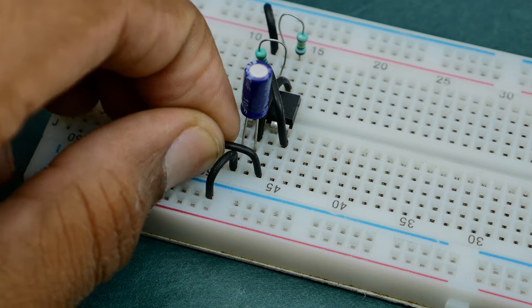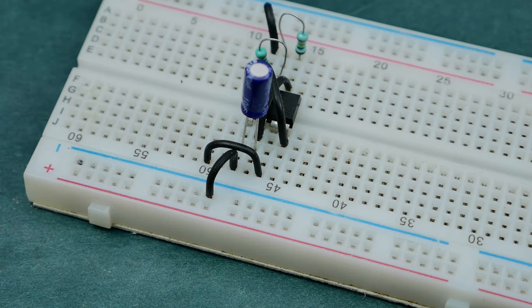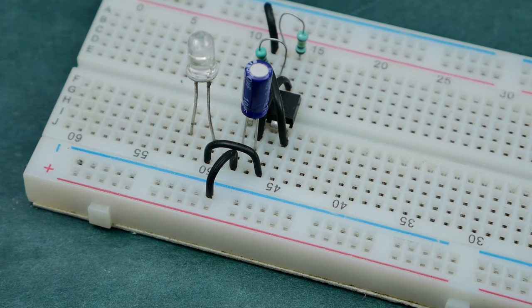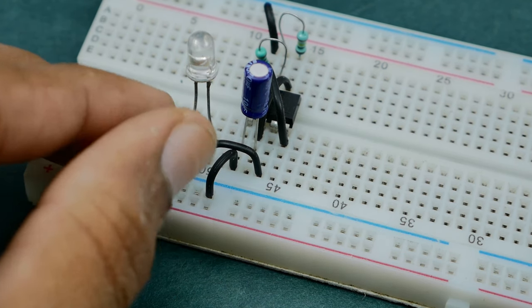Now extend the output pin of 555 IC which is at pin 3. Then connect the anode of an LED to this extended row and the cathode to negative rail via a 220 ohm resistor.